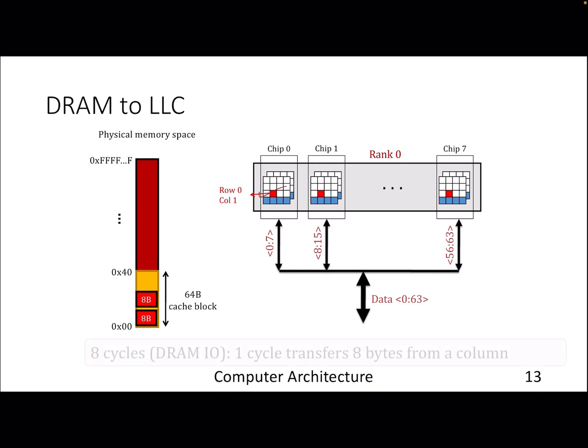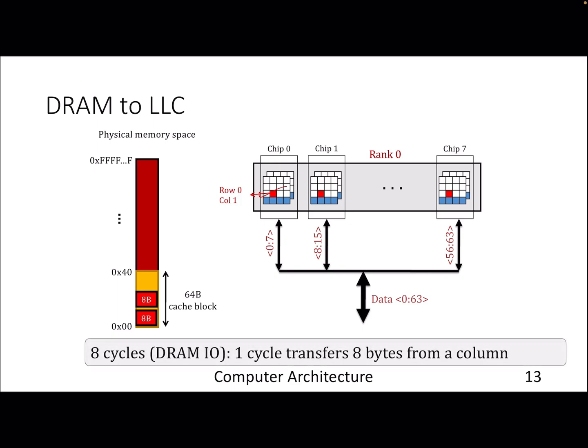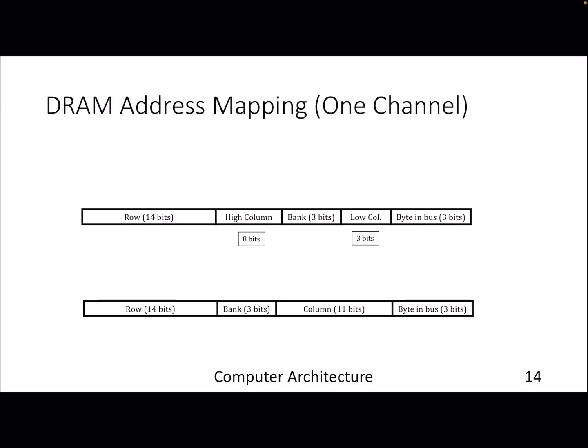From a latency perspective, to transfer a 64-byte cache block, assuming the DRAM has its own clock and frequency, it will take 8 DRAM cycles — in one cycle you transfer 8 bytes, so in 8 cycles you transfer the entire 64 bytes. This is a typical address mapping used in commercial DRAM controllers: given a physical address, how do you map to a particular rank, bank, row, and column — similar to cache mapping where you find a set number and compare the tag.